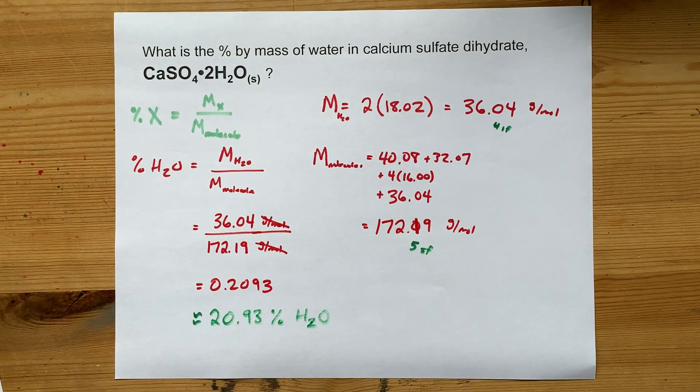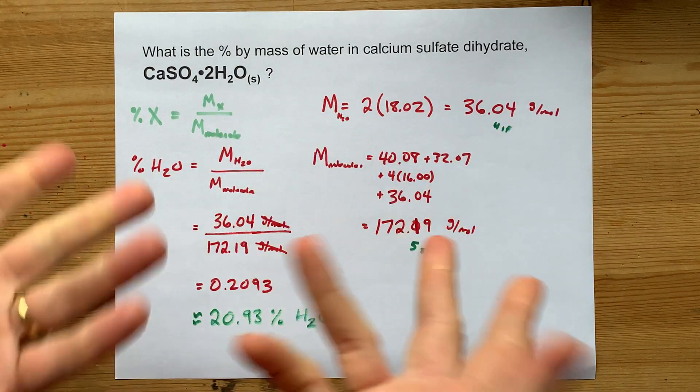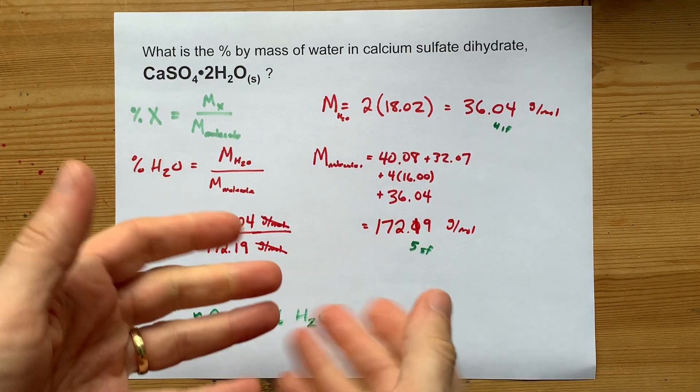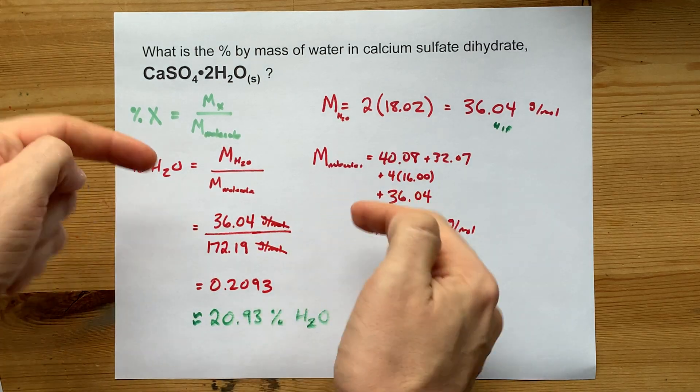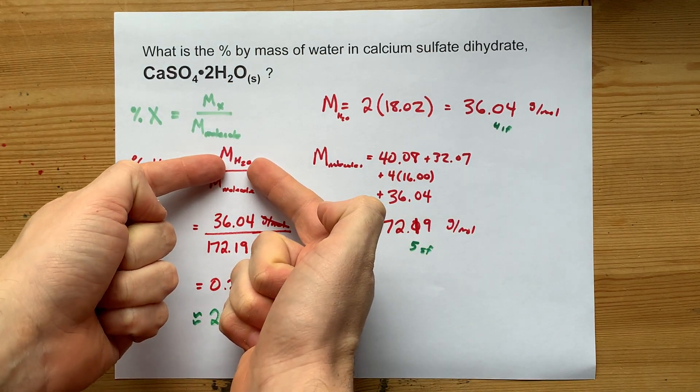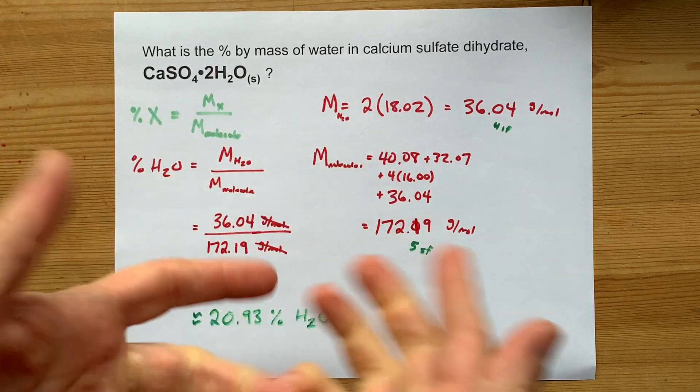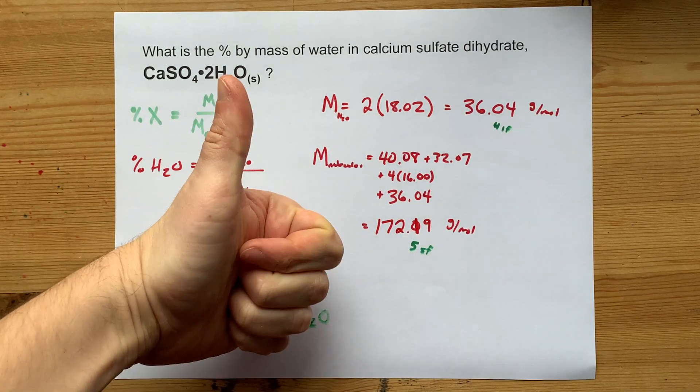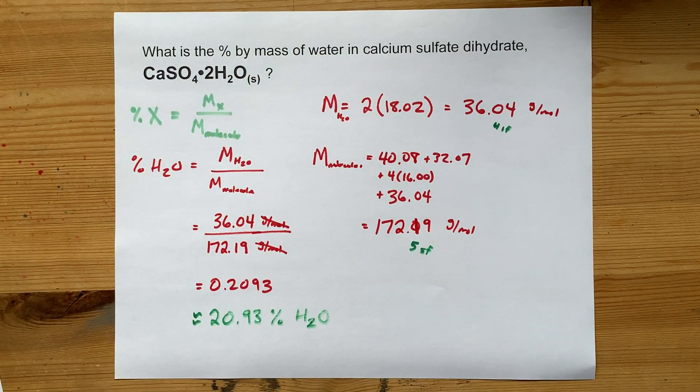Cool. Percent by mass of a hydrate is the same as percent composition of each element. You're just going to treat it as the contribution of water out of the whole molecule instead of the contribution of each particular type of atom. Nice. Thanks for being with me. And best of luck.